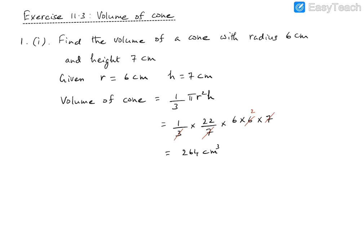The volume of the cone for the given dimensions is 264 cm³. The answer is in cm³ because the dimensions for radius and height were given in centimeters.